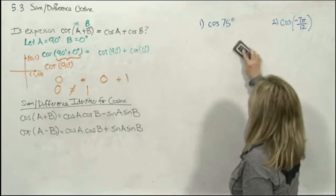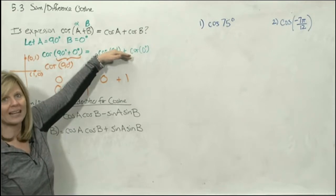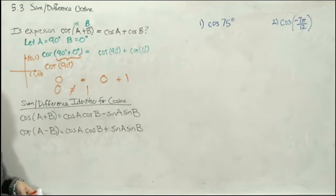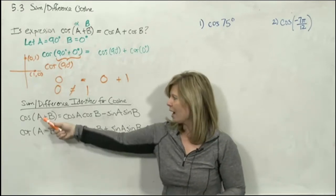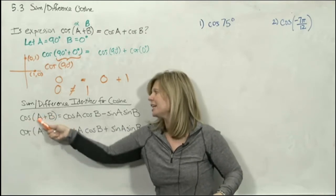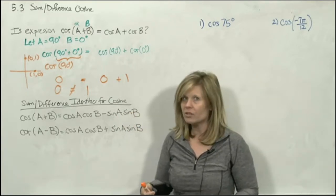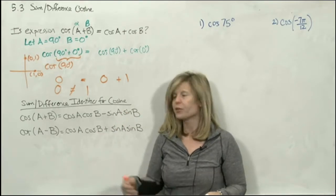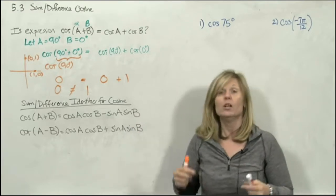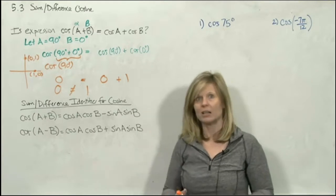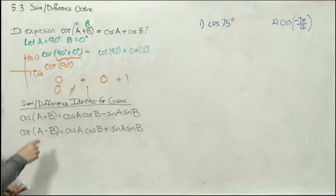So when you have a sum of two angles, cosine(alpha + beta) doesn't equal cosine alpha plus cosine beta. Then what does it equal? Here's where identities come from. Your textbook says: cosine(alpha + beta) equals cosine alpha · cosine beta minus sine alpha · sine beta. I normally show you where things come from, but the proof is long. If you want to see the development, you can look in your textbook.